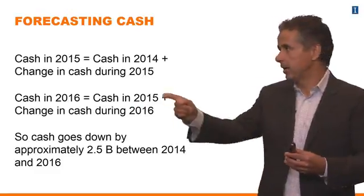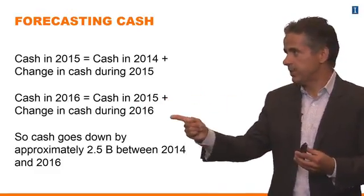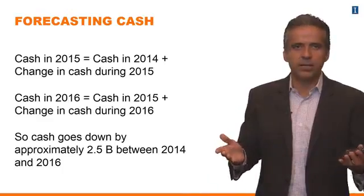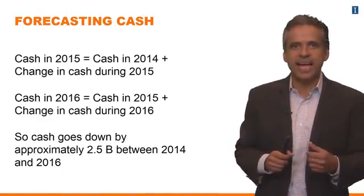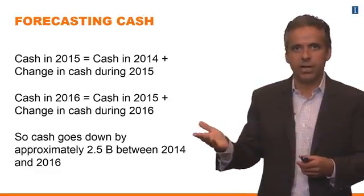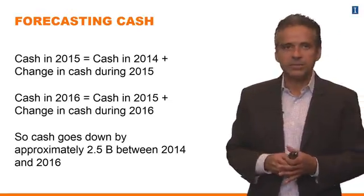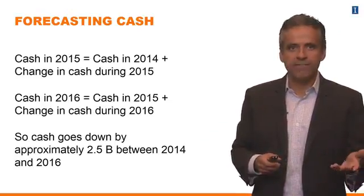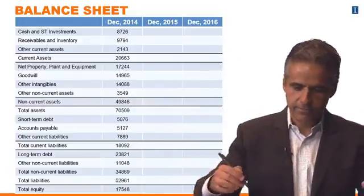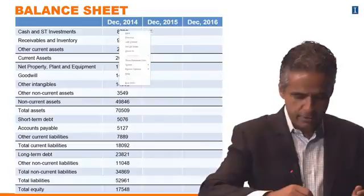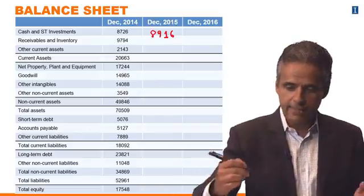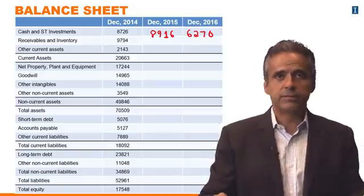And then you go to the future year — 2016, what happens? We start with cash in 2015 and then add or subtract the change in cash in the next year. So as we just learned from forecasting the cash flow statement, what's happening here is that the company is generating a bit of cash in 2015 and then generating a large negative cash flow in 2016. Cash is going up a little bit from 2014 to 2015, and then it's going to go down substantially from 2015 to 2016.